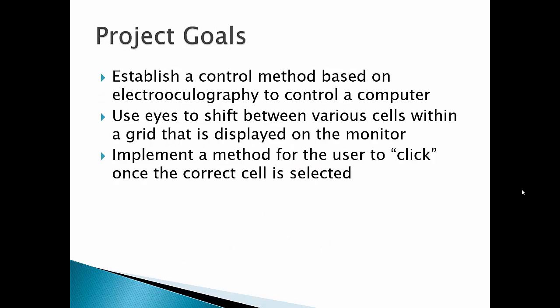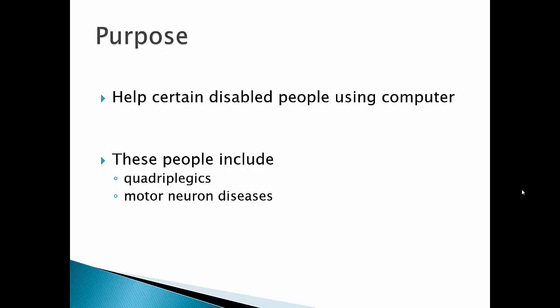Our project goal is to establish a control method based on EOG to control computers. Use eyes to shift between cells within a 5x3 grid that is displayed on the monitor, and implement a method for users to click on a selected cell. The purpose is to help certain disabled people using computers. This will help them to better communicate with others and be more productive. These people include quadriplegics and motor neuron diseases, such as the famous ALS.